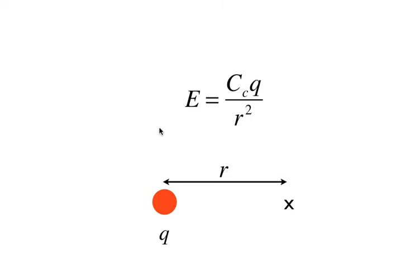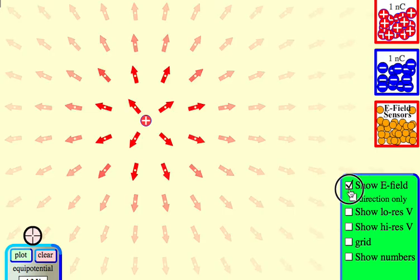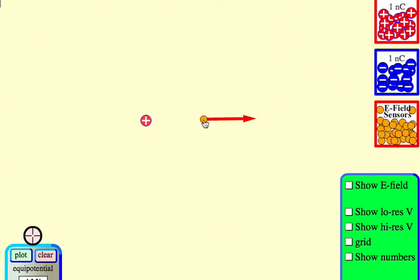Another idea that we have is the idea of an electric field and you only need one charge for an electric field. So when I have a single charge surrounding it is going to be an electric field.